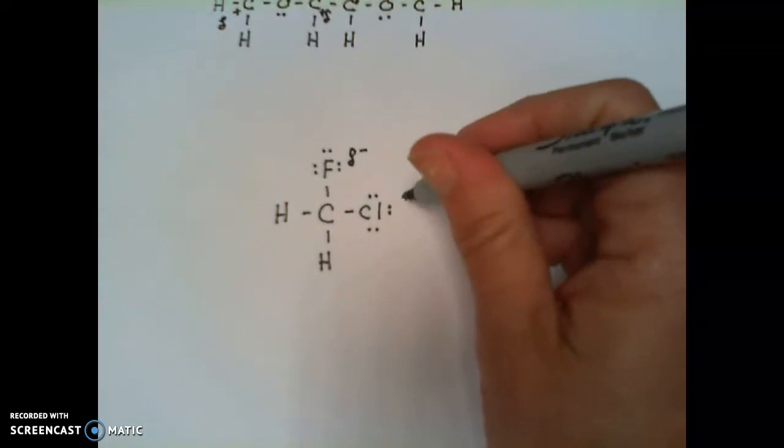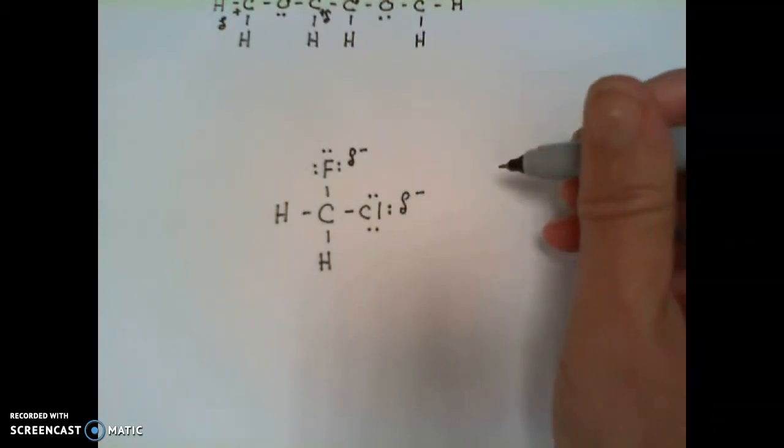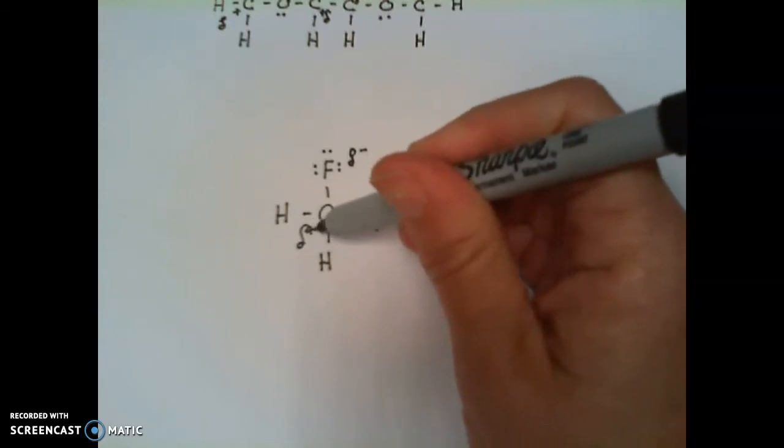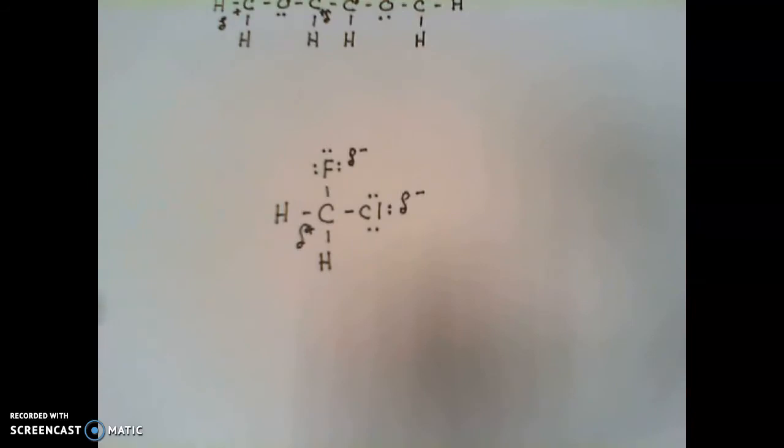The chlorine will also have a partial negative charge, and that leaves a partial positive charge on the carbon.